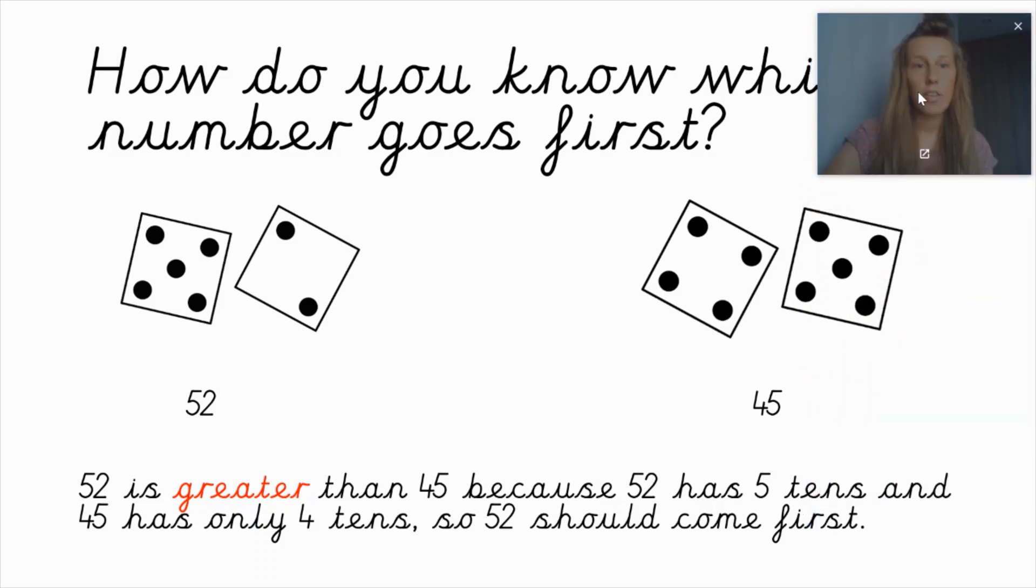The first number that I got, the first die shows me five. So, this number has got five tens. And the next die shows me two. That means it's got two ones. So, the number that has got five tens and two ones is fifty-two. I got my first number.